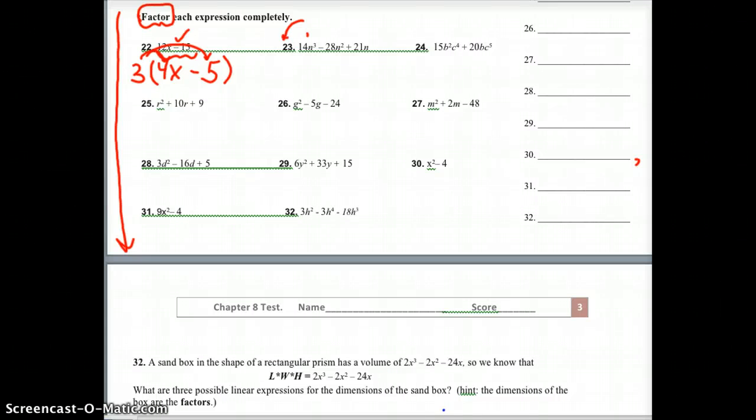And remember these are all checkable by just multiplying. Number 23, what's in common to all these terms? Well, 14, 28, and 21 all have a 7 in them. Also, all those terms have an n cubed and an n squared and an n. They all have an n in them. So when we divide that out or factor it out, when we remove the 7 from the 14, it gives us 2. And when we remove the n from the n cubed, it gives us n squared. It's the reverse of what you were doing on the other page. Then we need a minus. We need to create the 28n squared, so we need a 4n. And then to create the 21, all we need is the 3. And again, you can always just multiply that back in to check.